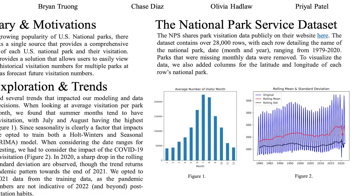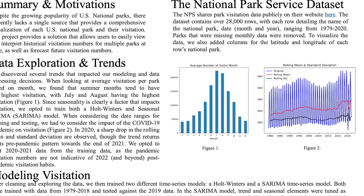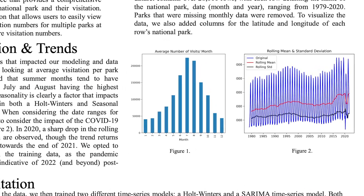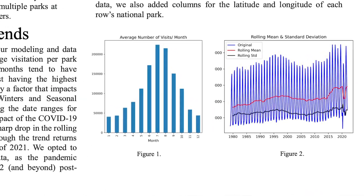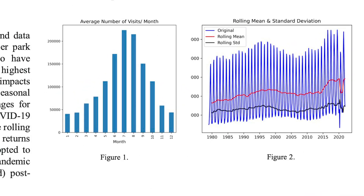When preparing and exploring the data, we removed eight national parks that were missing monthly data. We also appended columns for the latitude and longitude of each national park. Exploring the data further, we noted that visitation across all parks is seasonal, with visitation surging in summer months.